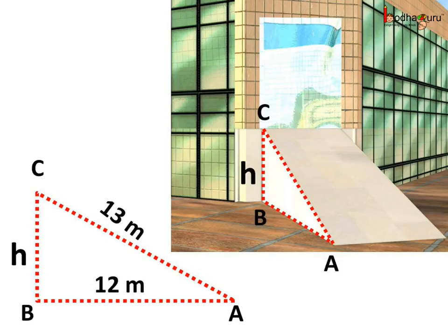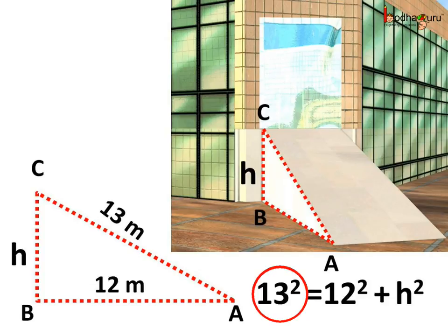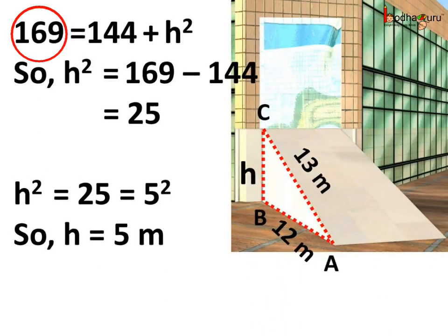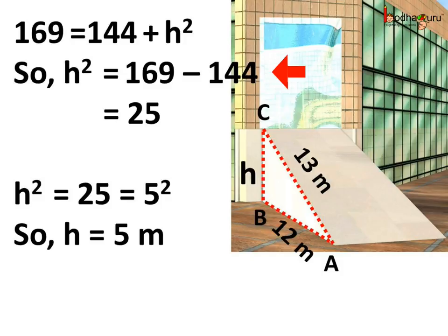According to the Pythagoras theorem, AC squared equals BC squared plus AB squared — that is, the square of the hypotenuse equals the sum of the squares of the base and perpendicular. So 13² = 12² + h², which gives 169 = 144 + h². Therefore h² = 169 − 144 = 25, and since 25 = 5², h equals 5 meters.